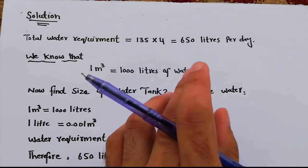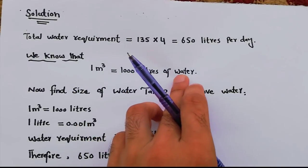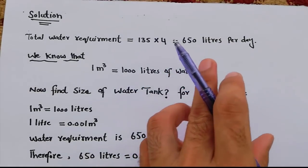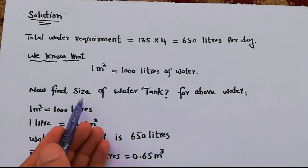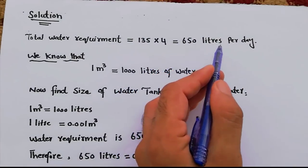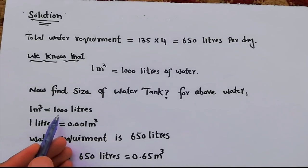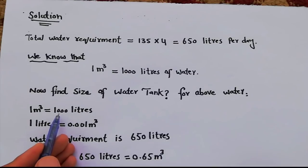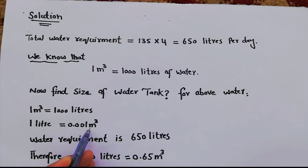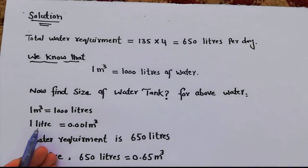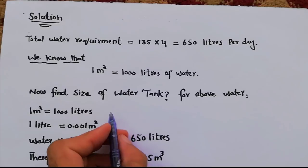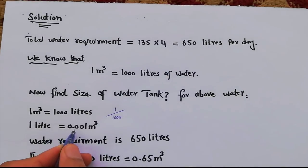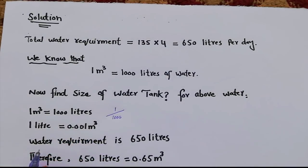We know that one cubic meter equals one thousand liters of water. So one liter equals 0.001 cubic meters. This is because one divided by one thousand gives us 0.001 — so one liter volume in cubic meters is 0.001 m³.